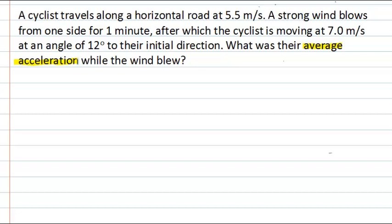Looking further into the problem, we can see quite a bit of information that's being supplied. The object, in this case a cyclist, has an initial velocity with a speed of 5.5 metres per second moving along a horizontal road. Then a wind exerts a force for some time, and the object has a different final velocity with a speed of 7 metres per second, now at 12 degrees to the initial direction. Additionally, the question tells us how long it took — one minute.